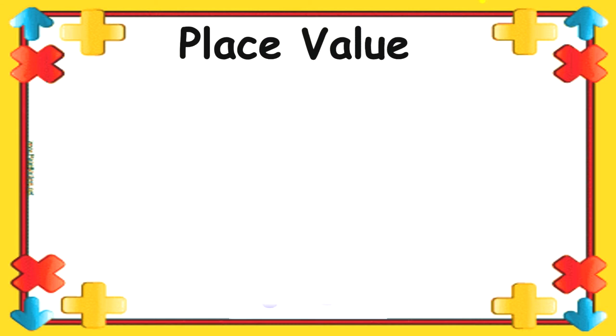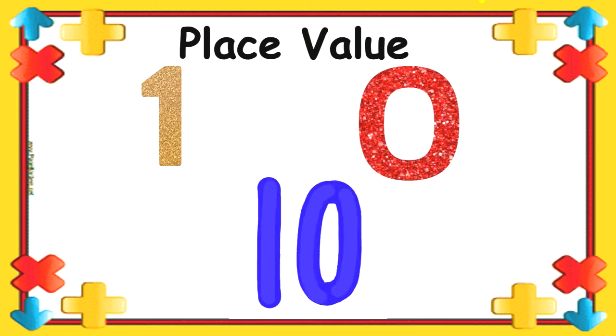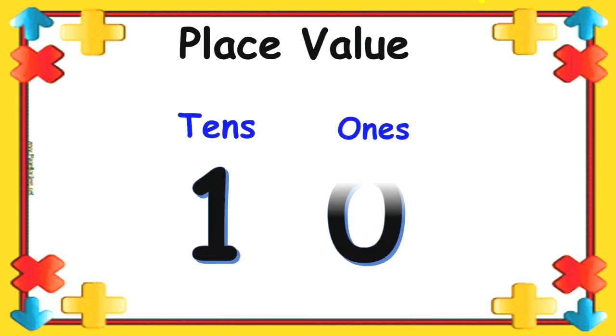But when we need to write number ten, we need two places. How many places we need? Two places. One and zero. So, we write 0 in 1's place and 1 in 10's place. The place before the 1's is called 10's place. So, when we are writing 10, 0 is at 1's place and 1 is at 10's place.